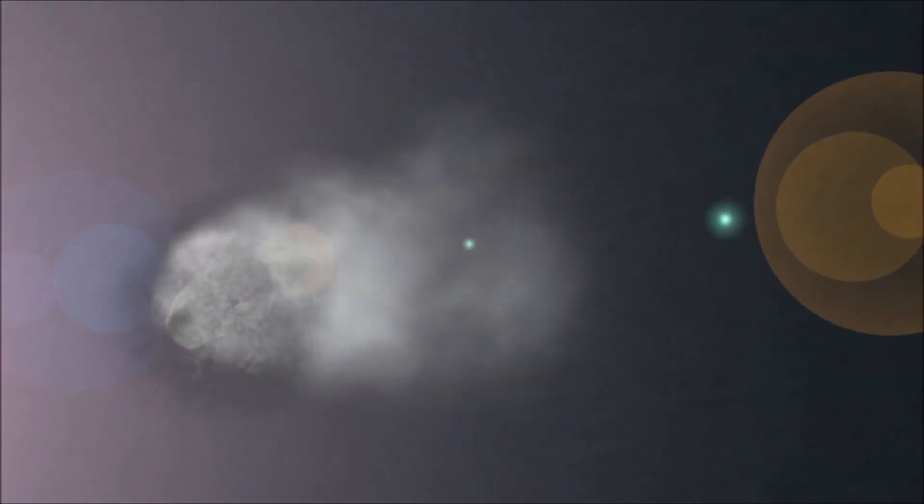Scientists believe that short period comets come from the Kuiper Belt, and long period comets come from the Oort Cloud.